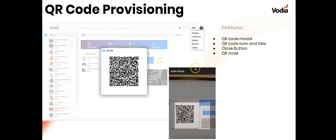For QR code login, under the account menu choose QR code — it'll display the QR code, and you can use your phone's camera to scan it and provision the account directly with that QR code.